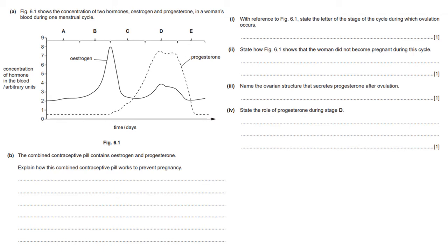This was the first question they had to deal with. I will annotate with my red pen. The A part had four questions. Figure 6.1 shows the concentration of estrogen and progesterone in a woman's blood during one menstrual cycle — estrogen is the solid line and progesterone is the dotted line, marked into phases. The question asks: state the letter of the stage during which ovulation occurs. Ovulation occurs at C, because a surge in estrogen results in an increase in LH and FSH, and that is where ovulation occurs.